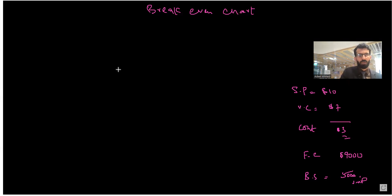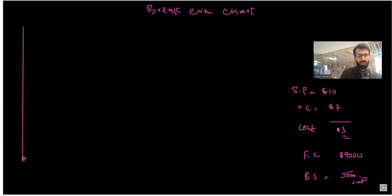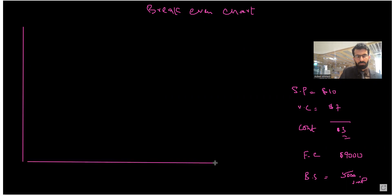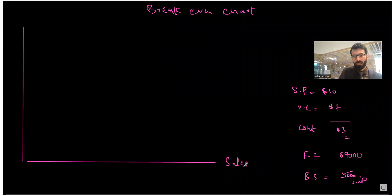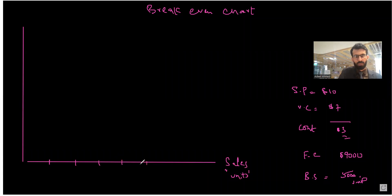So this is what we have already discussed and we will draw our diagram based on the same assumptions. On the diagram, this will be the amount on the vertical axis and this will be the units on the horizontal axis. We have sales either in terms of units or in terms of sales revenue. Because we have a maximum of 5,000 units, we mark 1, 2, 3, 4, and 5 thousand units.